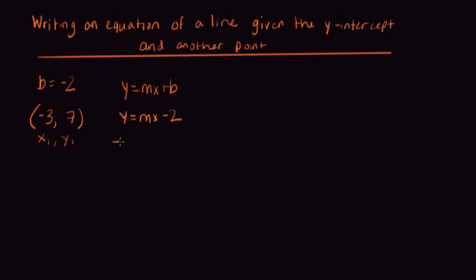So we would put in 7 for y equals m times negative 3 for x minus 2. Now again, this isn't going to give us the equation of the line because the equation of the line needs a general y and a general x. But we can use the specific x and the specific y in this equation to solve for m.